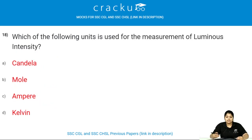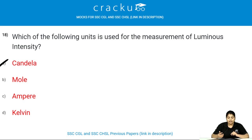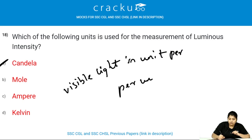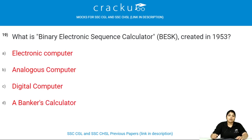Which unit is used for the measurement of luminous intensity? The unit for luminous intensity is candela. Luminous intensity refers to the quantity of visible light emitted in unit time per unit solid angle.